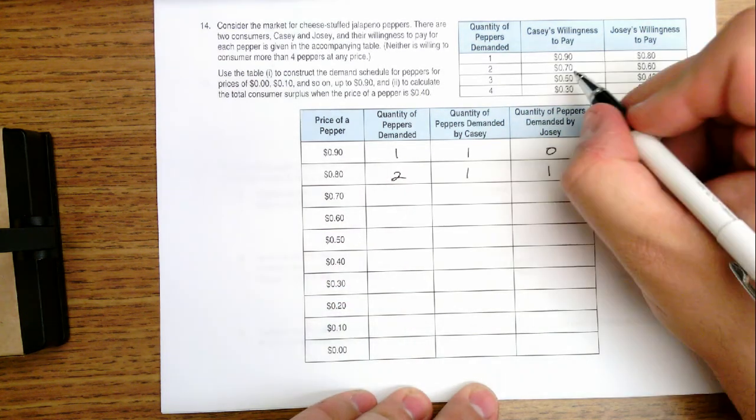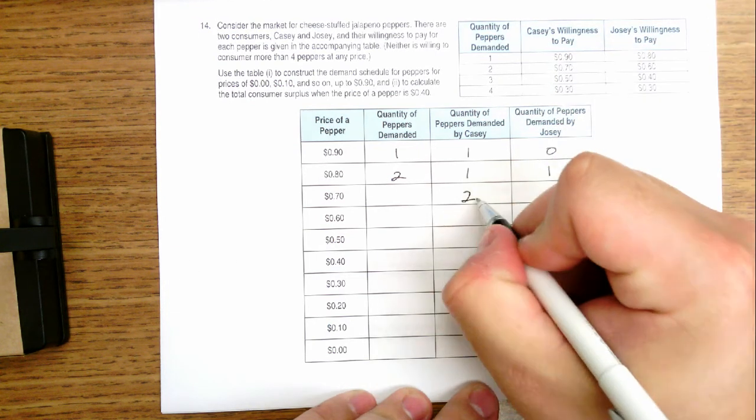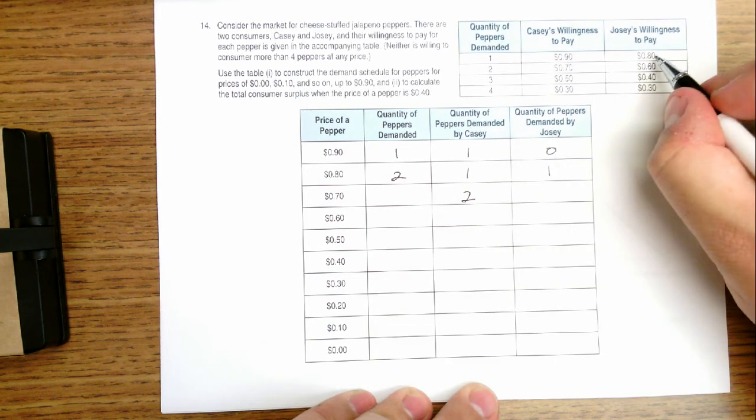If the price is $0.70, Casey's willing to buy two peppers at $0.70. Josie's only willing to pay for one.